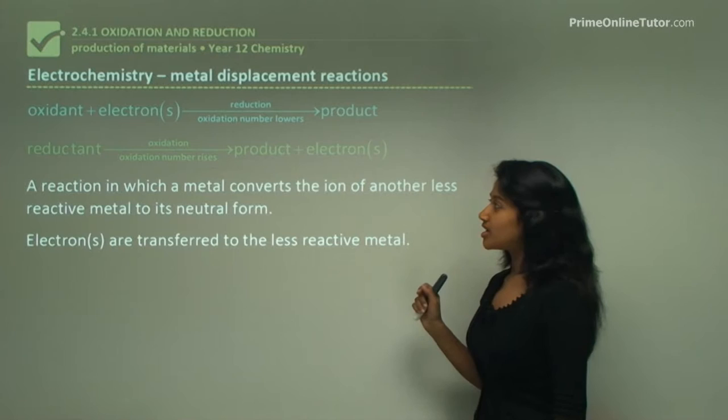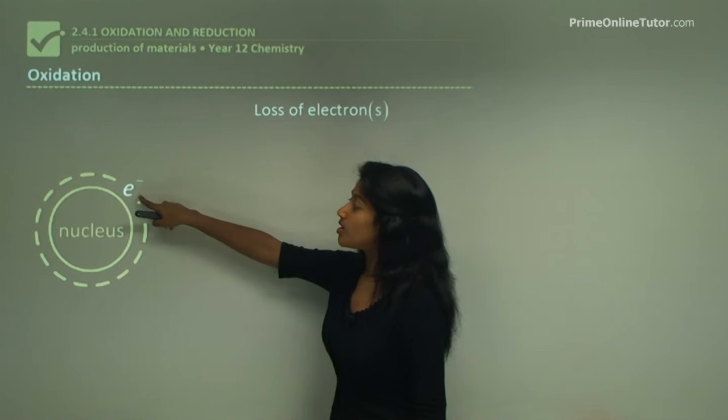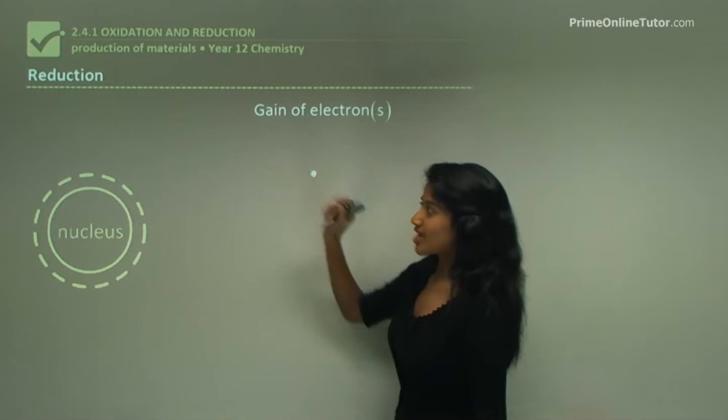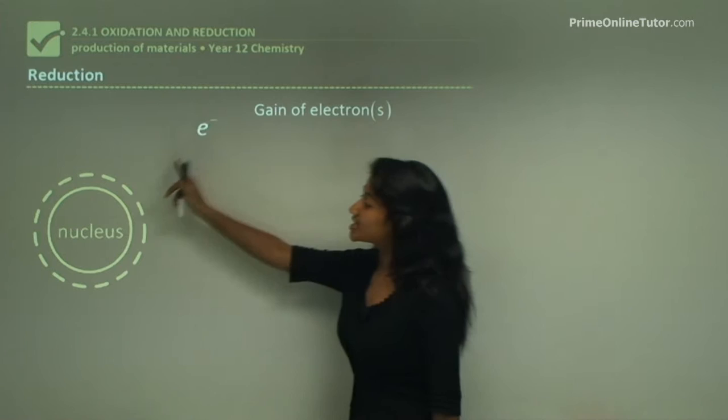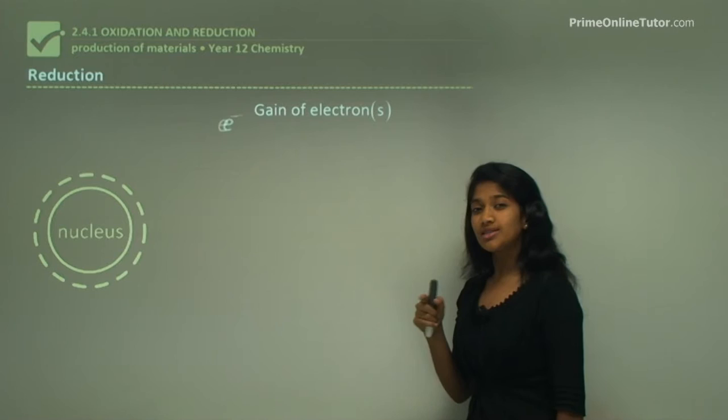Let's look at oxidation in greater depth. In the process of oxidation, one electron is lost from an atom - this is called the loss of electrons. In a reduction reaction, the lost electron from the oxidation reaction is gained by another atom - this is called the gaining of electrons. Remember OIL RIG: oxidation is the loss of electrons while reduction is the gaining of electrons.